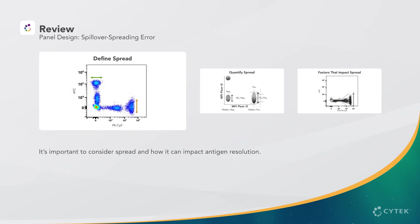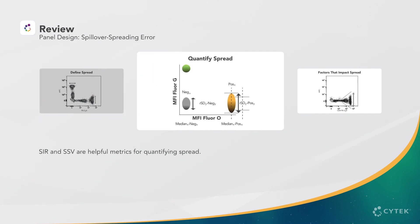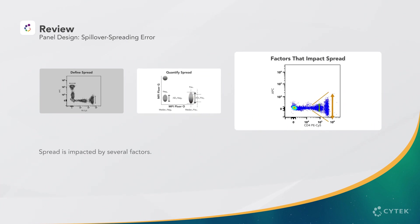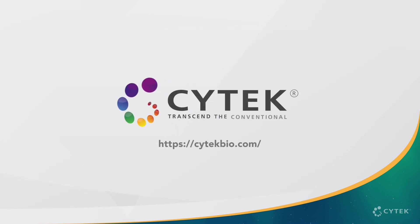In conclusion, it's important to consider spread and how it can impact antigen resolution in order to appropriately select fluorochromes for your panel. SIR and SSV are helpful metrics for quantifying spread, and we showed how several factors can impact the magnitude of spread between fluorochromes. This concludes Step 3 in our Panel Design Series. In Step 4, we'll apply the concepts we've covered so far to design a multi-color panel. Visit SciTech's SpectraLearn Educational Portal to learn more on this and many other topics.